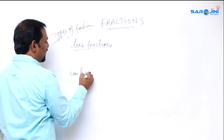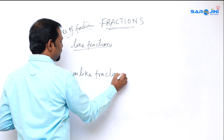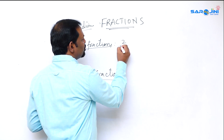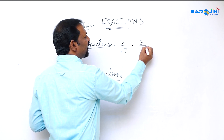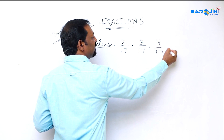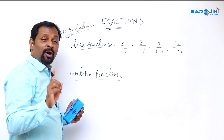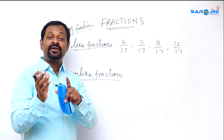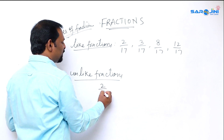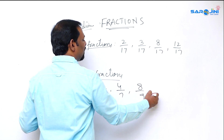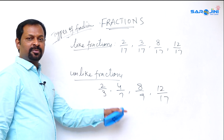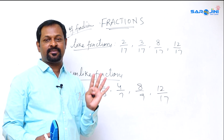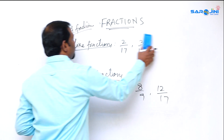Next, there are like fractions and unlike fractions. Like fractions are fractions where the denominators are the same — for example, two by seventeen, three by seventeen, eight by seventeen, twelve by seventeen. Unlike fractions are fractions where the denominators are different, such as two by three, four by seven, eight by nine, or twelve by seventeen.